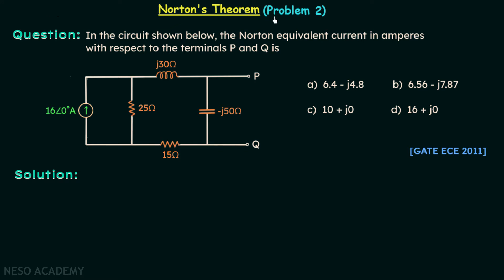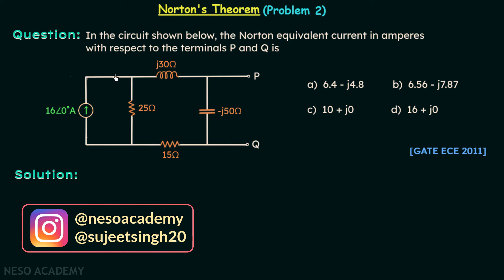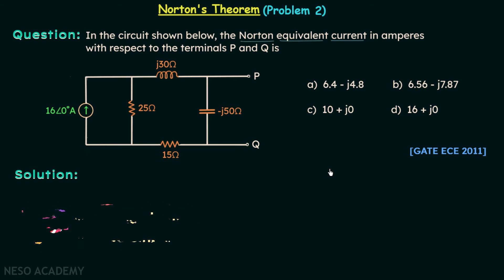Now we are going to solve problem 2 on Norton's theorem. This problem is from the GATE ECE 2011 paper. According to this problem, we need to find the Norton equivalent current in amperes with respect to the terminals P and Q. There are four options, out of which one option is correct, and we are required to find that correct option.